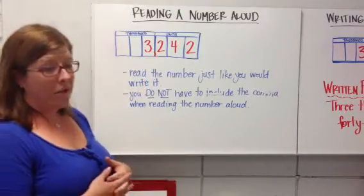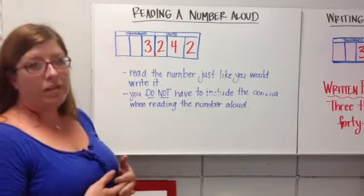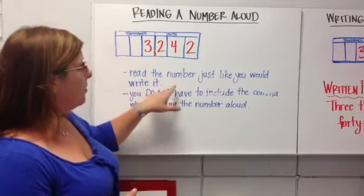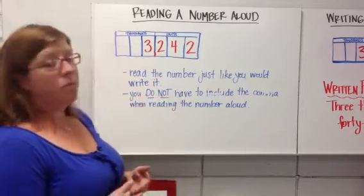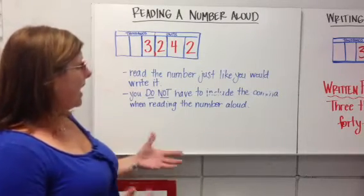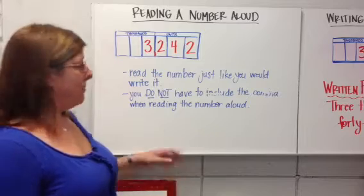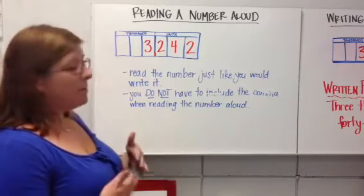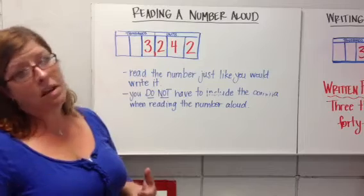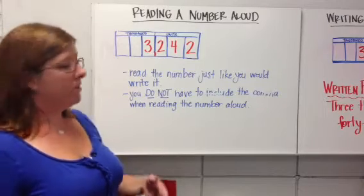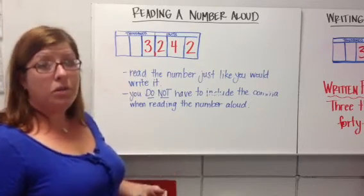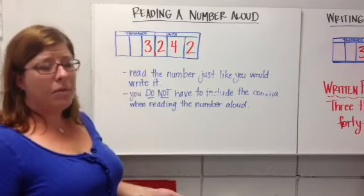Reading a number aloud can be a little bit more tricky if you don't know what you're doing. We read the number just like you would write it, which we already know. You do not have to include the comma when reading the number aloud. So I wouldn't say 'three thousand comma' — I would simply say 'three thousand two hundred forty-two,' just like I would write it.